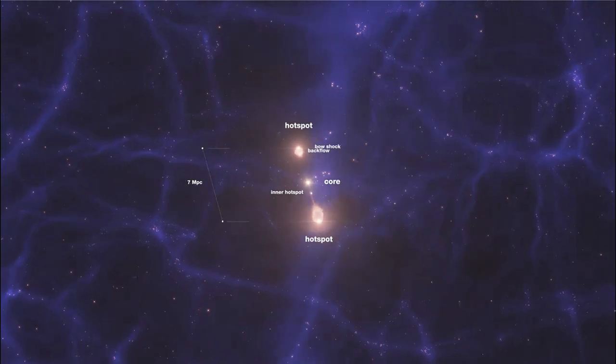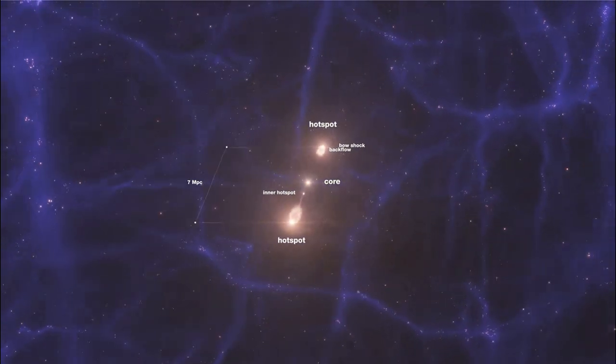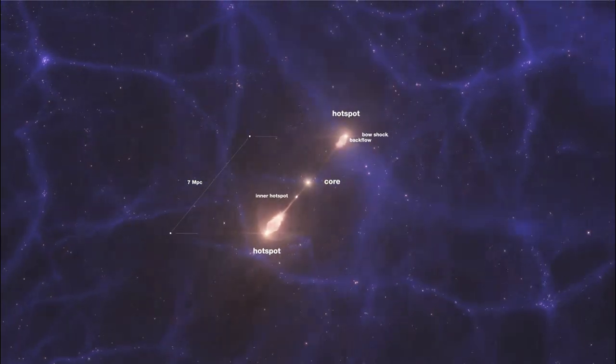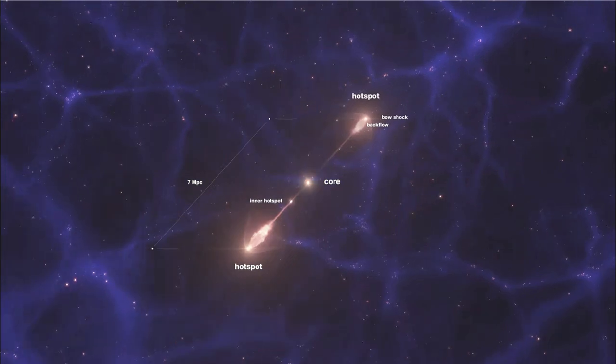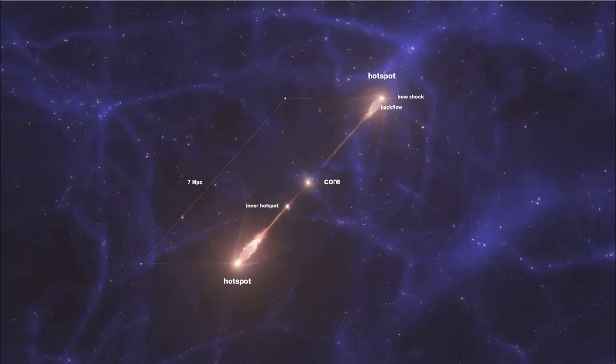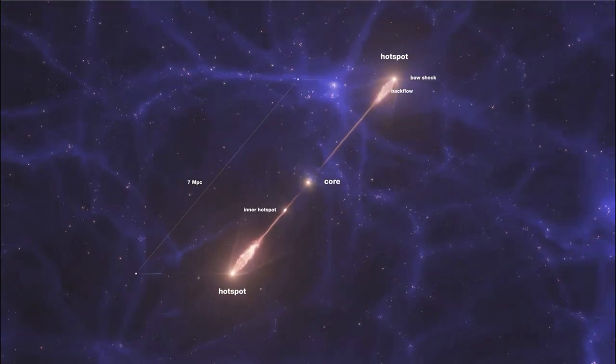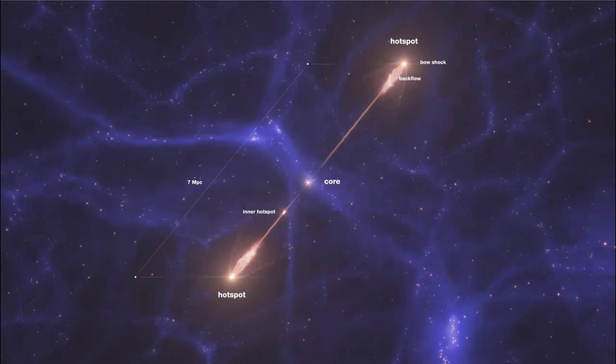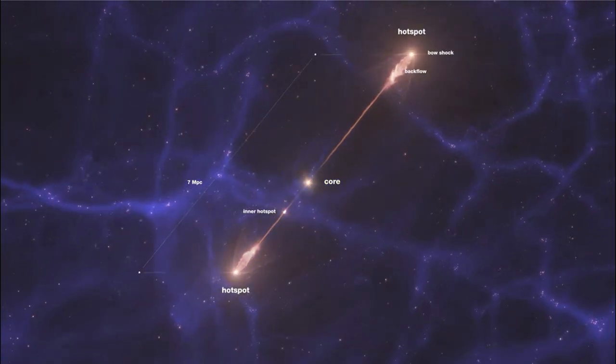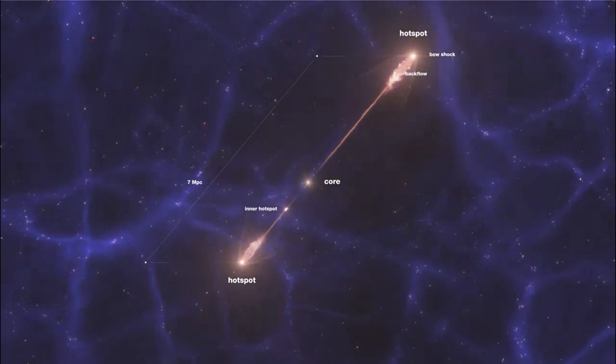So here we get to see it from all different angles. And of course, we don't get to do that ordinarily in observations. We only get to see it in one specific angle. So we can see different positionings as to how we could see jets like this in other areas.